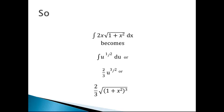And there I have the answer. That is the integral of 2x times the square root of 1 plus x squared dx. It's going to be 2/3 times the square root of 1 plus x squared to the third power. That's u to the 3/2 power. See how that worked? It's excellent.